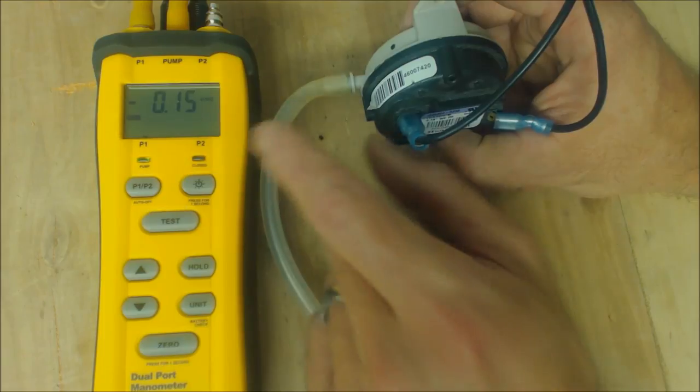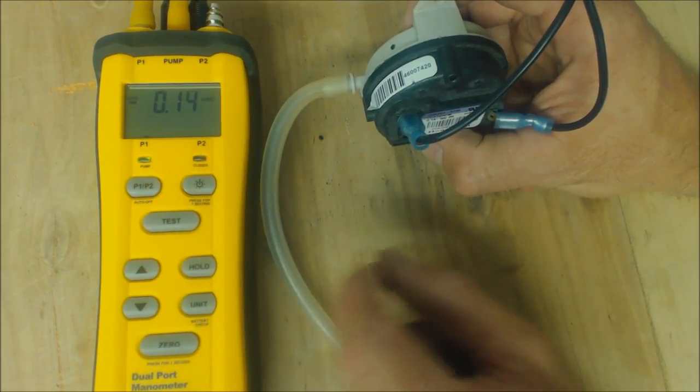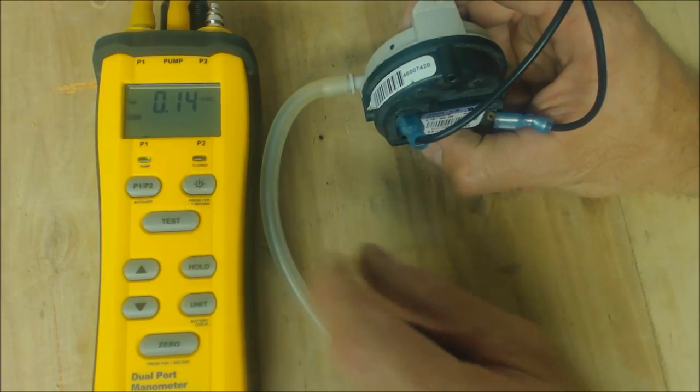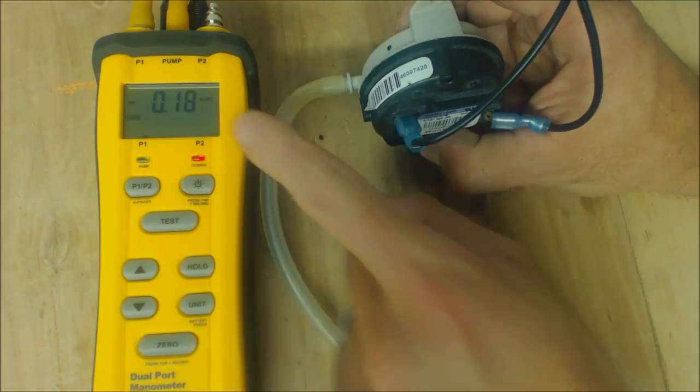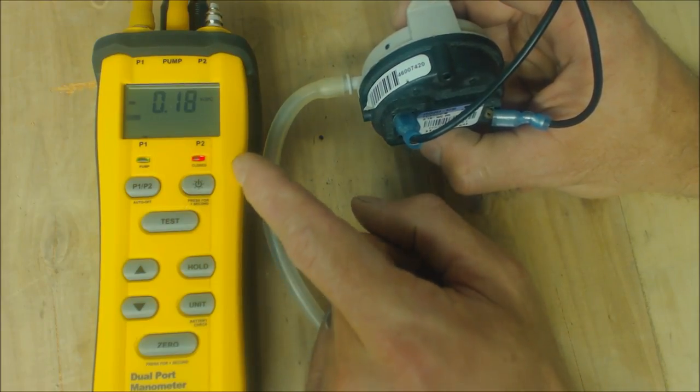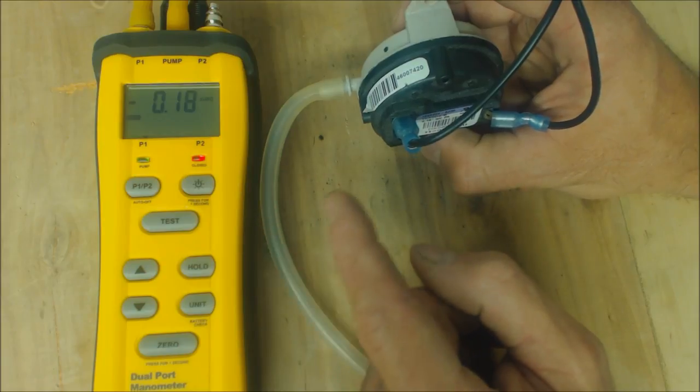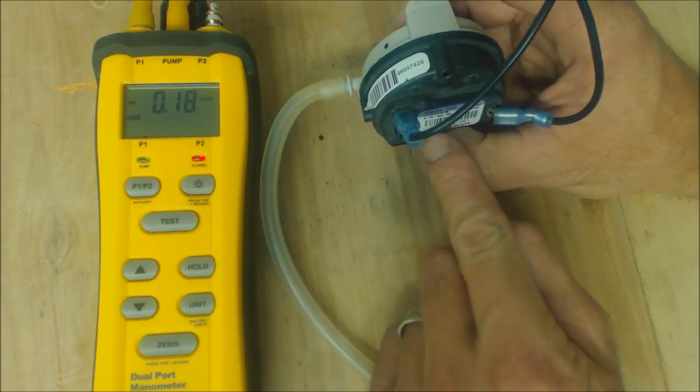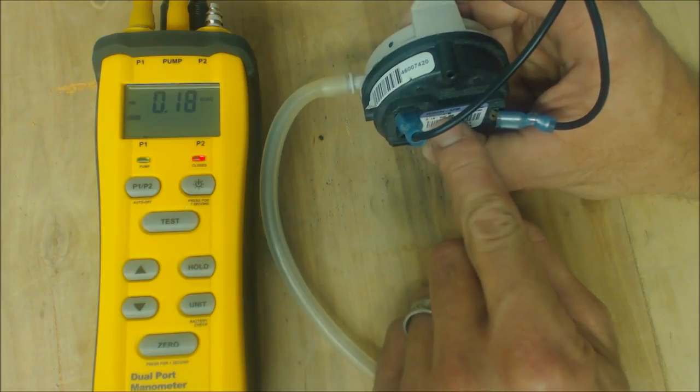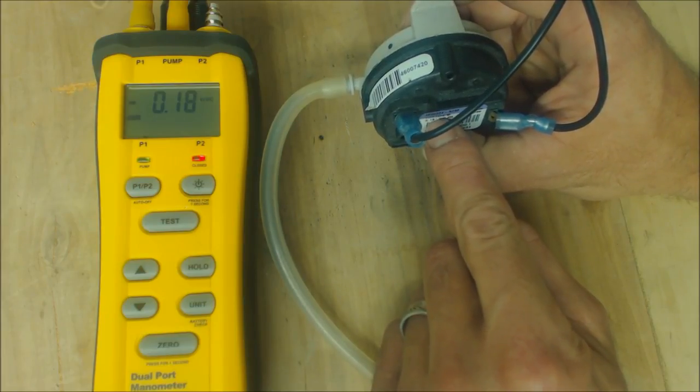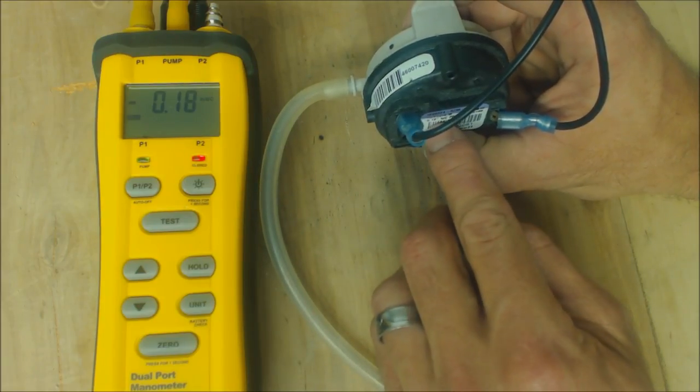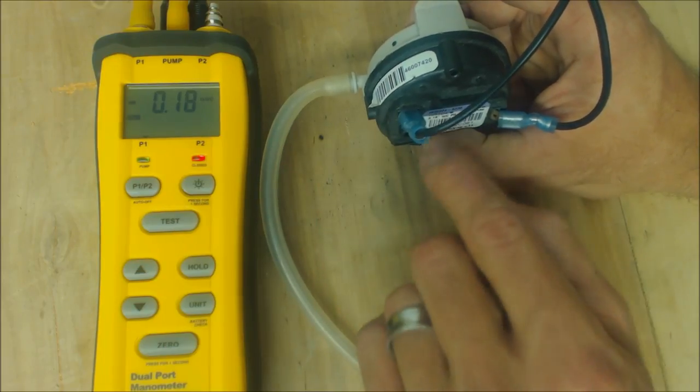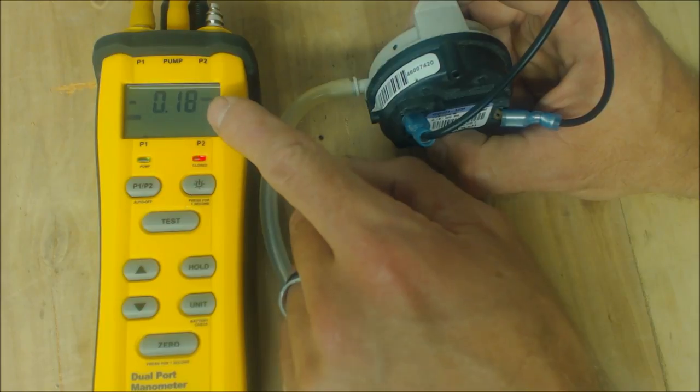You see that little button where it says 'closed' is now not lit. Once again we'll press hold to unhold it, press hold again—now it's flashing. We'll go back up and see what pressure it's going to close the electrical switch at. That time it was 0.18. So the first time it closed at 0.14, when it opened at 0.15, and now it closes at 0.18. That's about the tolerance of this—a very small negative pressure reading.